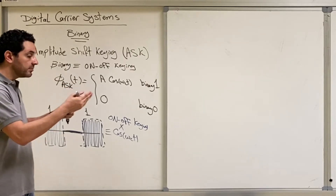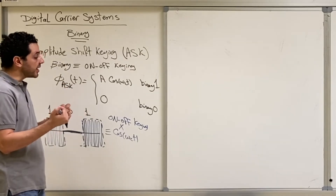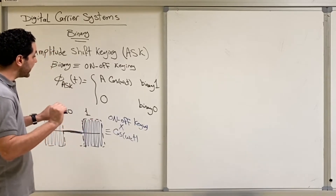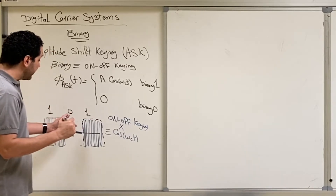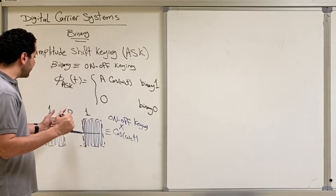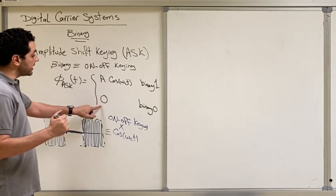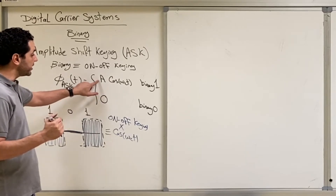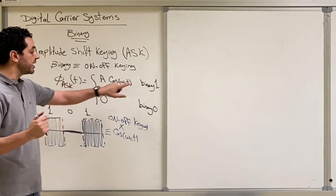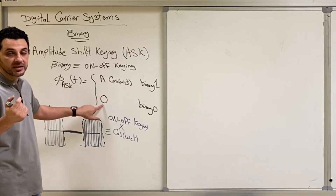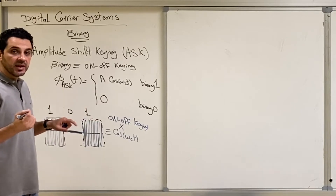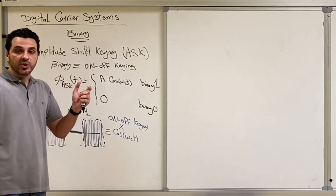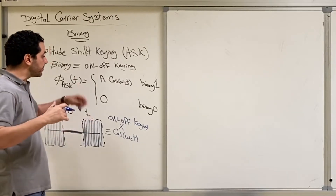Before we move to the next type of modulation, note that the two amplitudes A and zero of the carrier — we modulate the amplitude — can be chosen to be any two amplitudes. For example, they can be positive or negative. Now let's move to the next type of modulation, which is Phase Shift Keying.